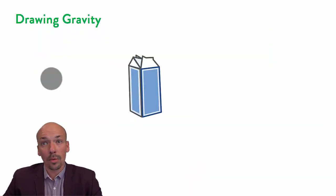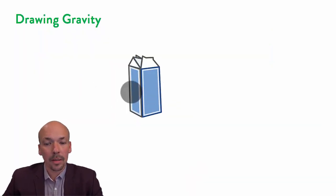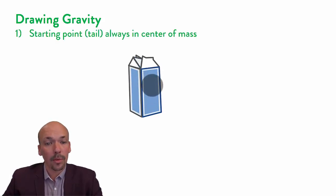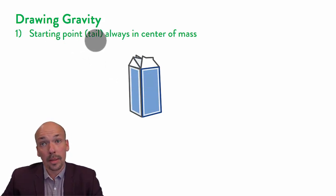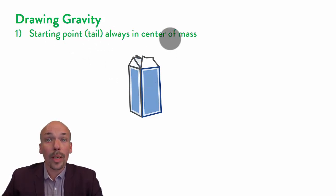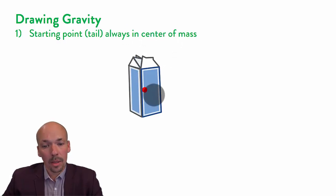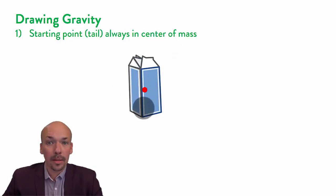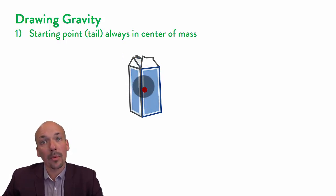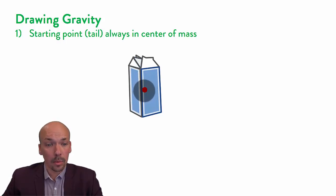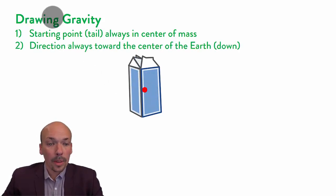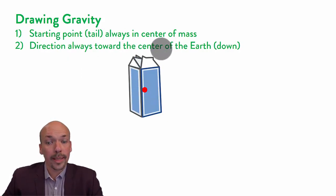I will now give an example of how to draw gravity. As you can see here, there's a carton box full of milk, and we will draw the gravitational force on it. We first start with the starting point — the tail — and when drawing gravity it is always at the center of mass, so in this case somewhere in the middle. It's not necessarily the center of the object, but the center of the mass. Then, when drawing gravity, the direction is always towards the center of the earth — so always downwards.